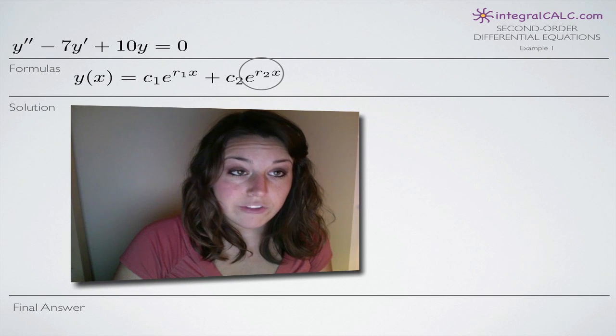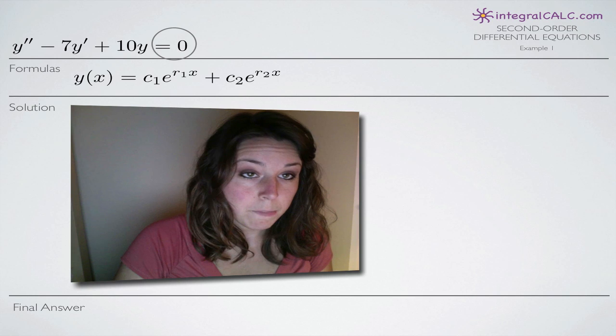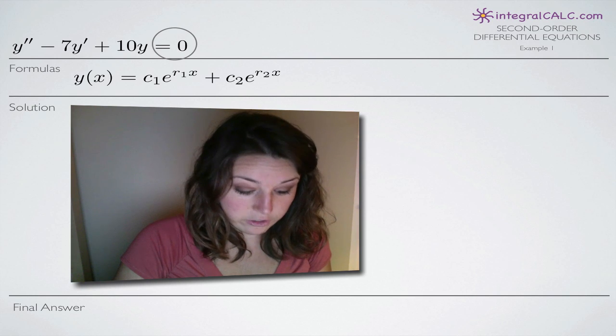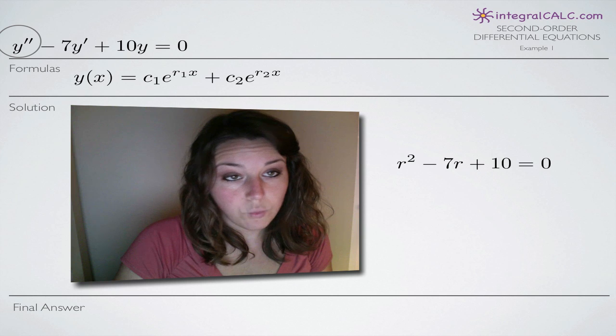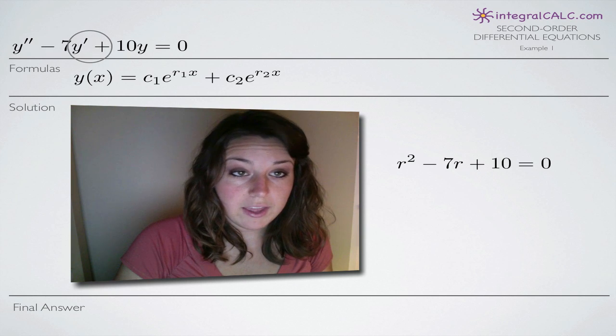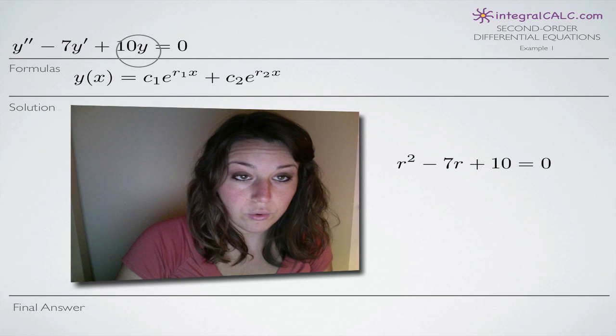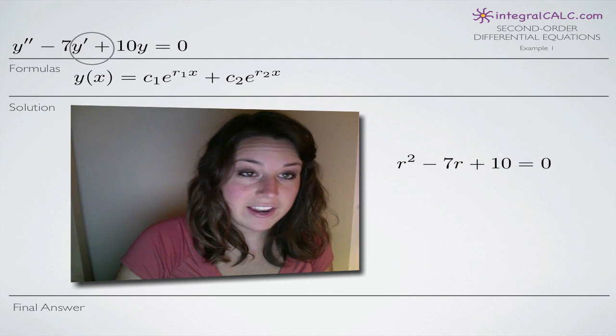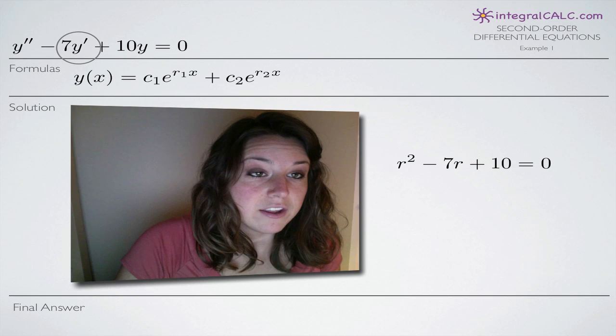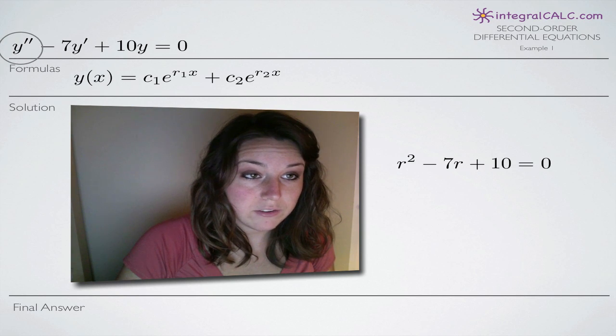And the way that we do that is by transforming our original equation here into something that we can factor. So what we do is we replace the y's with r's. And when we have just y on its own here, we're actually going to treat it as 1. And then y prime will treat as r. Y double prime will treat as r squared.